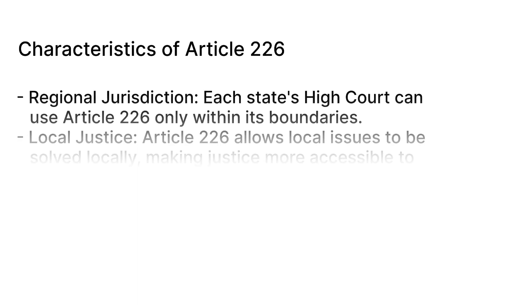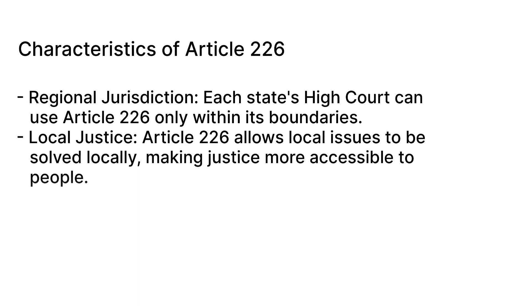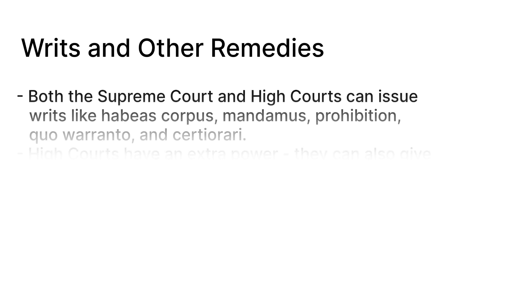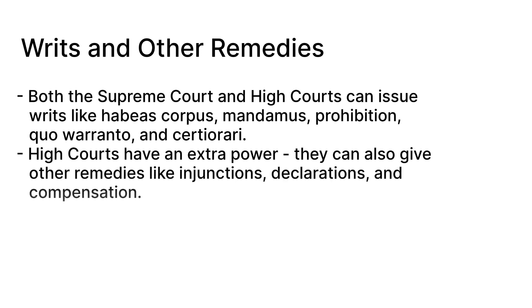Characteristic features of Article 226. First, regional jurisdiction. Each state's High Court can hear and resolve writ petition cases under Article 226. In this way, local issues can be solved locally, so that people can get justice more easily. Second, writs and other remedies. High Courts, like the Supreme Court, can also issue writs like habeas corpus, mandamus, prohibition, quo warranto, and certiorari.